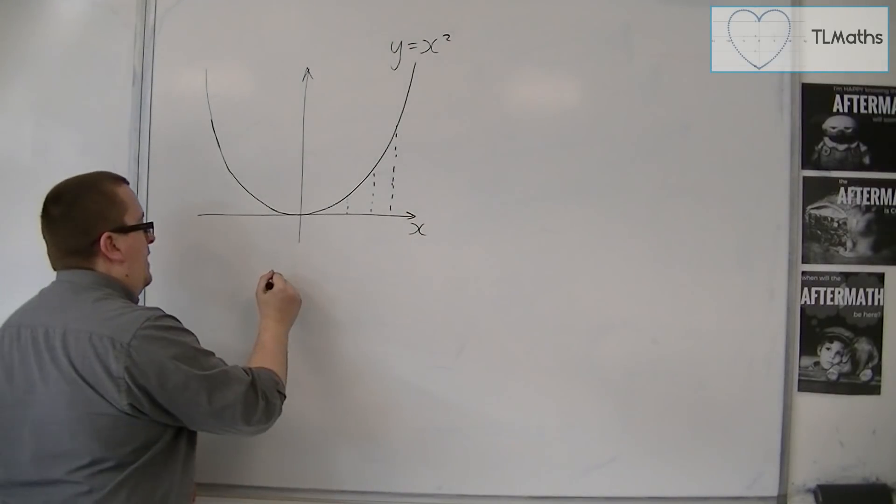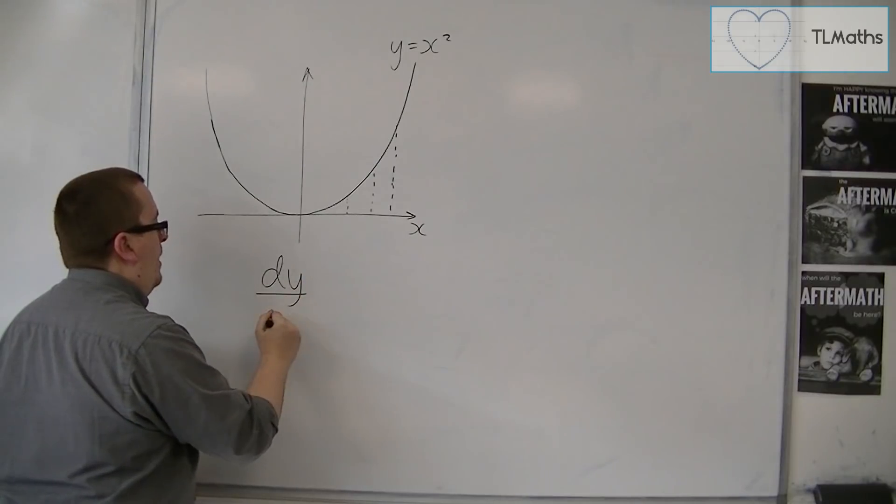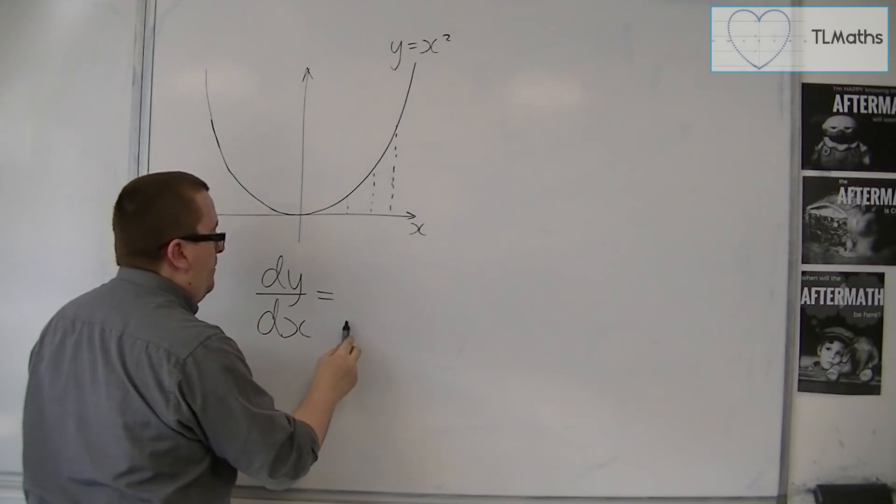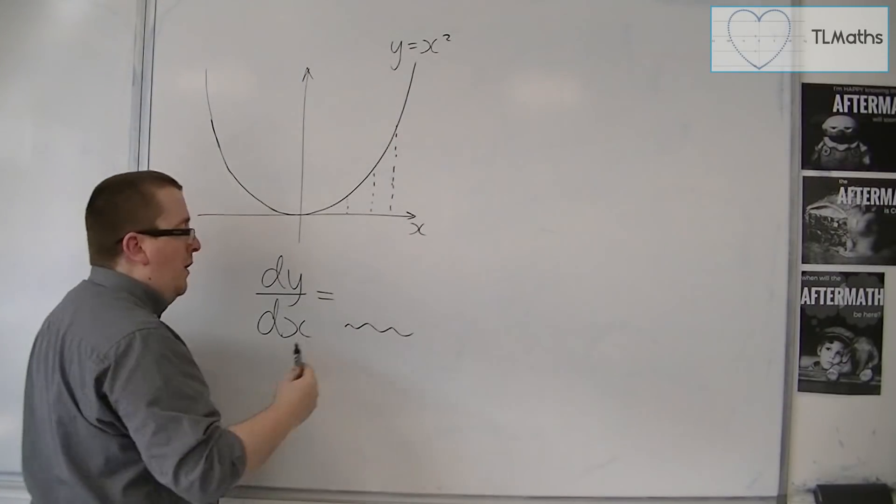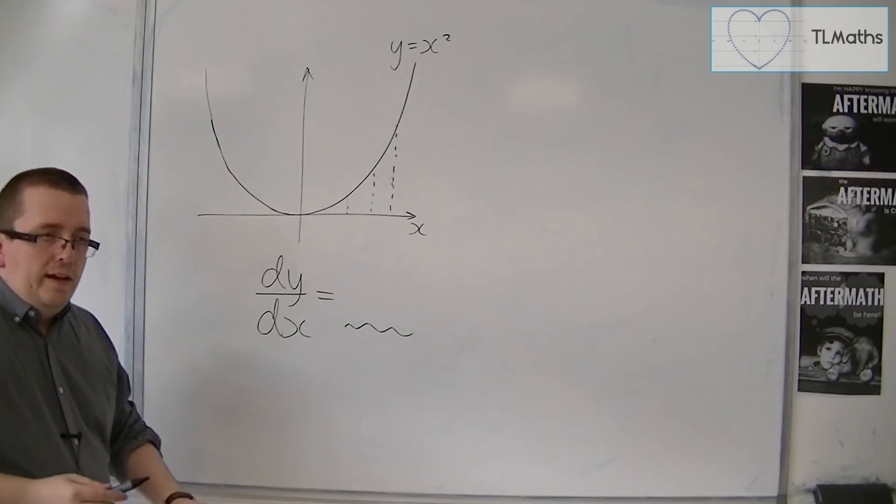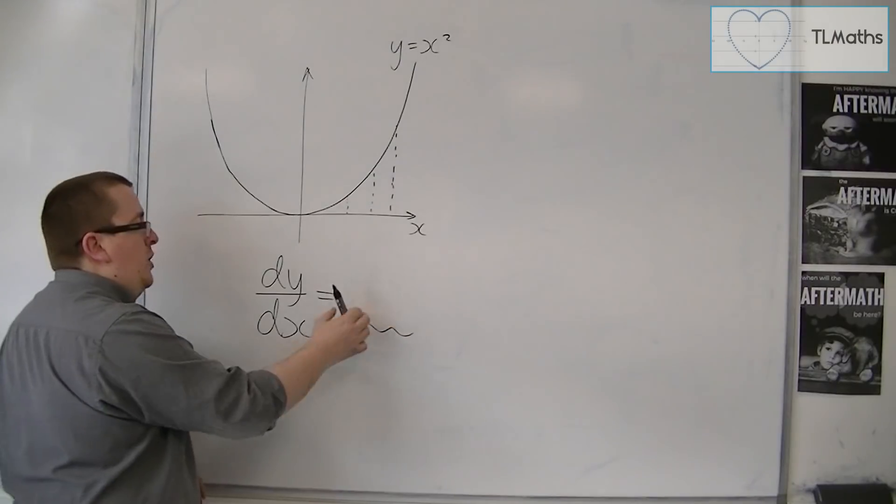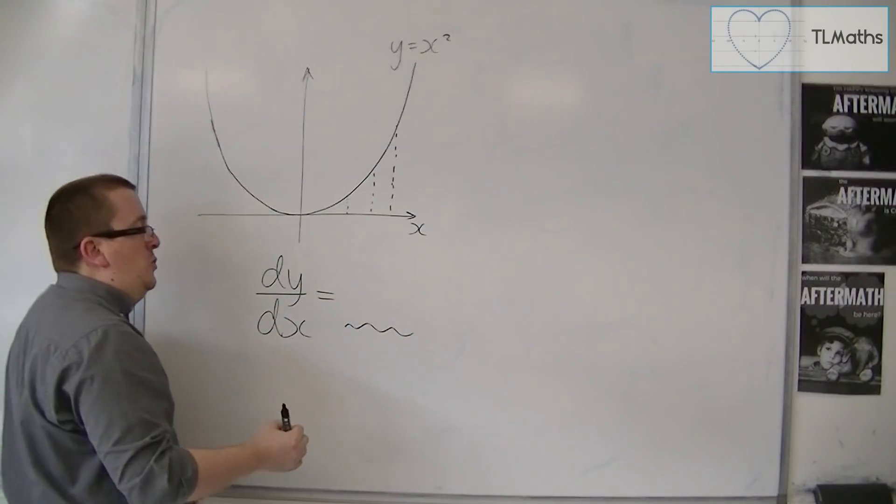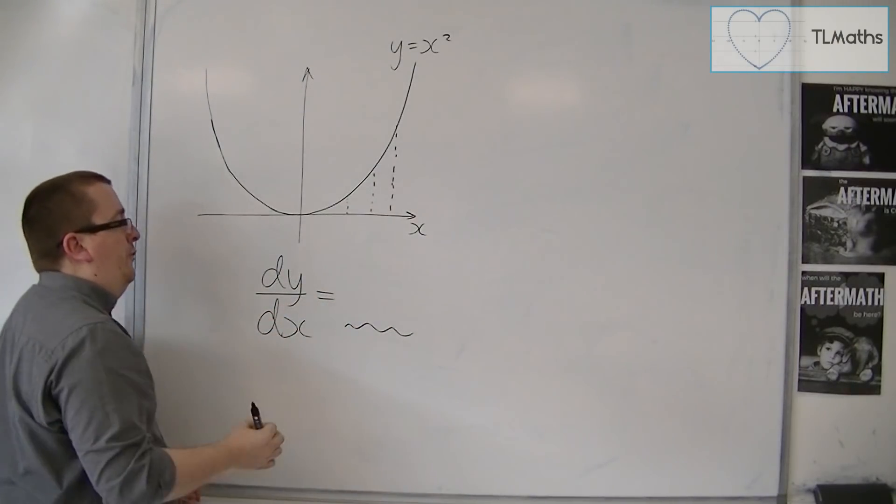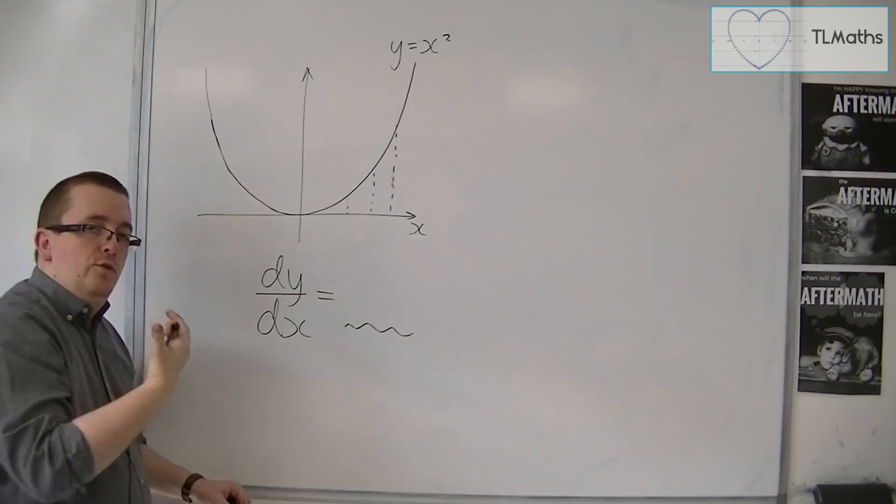So in other words, we will have this dy by dx equals something which will have an x in it. And it will change. If I choose x to be 2, or 3, or minus 5, the gradient will change.